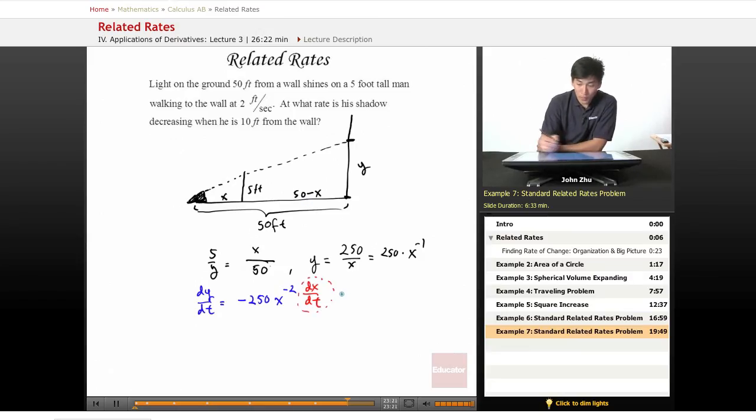This expression becomes negative 250 times x to the negative 2 times 2, which equals negative 500 over x squared.